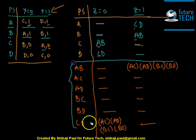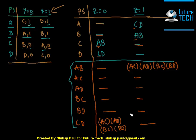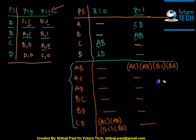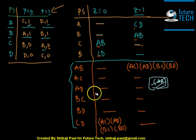Using the lower part of the testing table, we can determine whether the given machine is information lossless or not. If the lower part does not contain any repeating states — meaning no pair like aa, bb, or cc — then we conclude the machine is information lossless. In our example, the lower part contains no such repeating pairs, so we conclude that this machine is an information lossless machine.